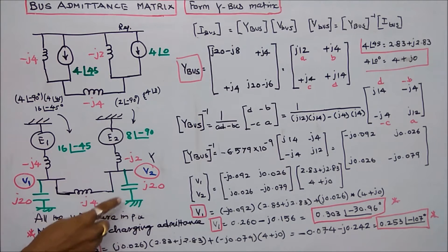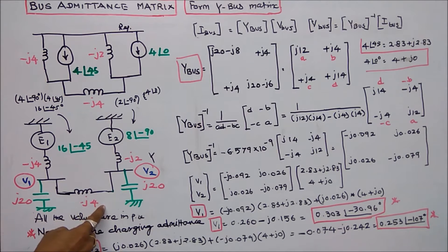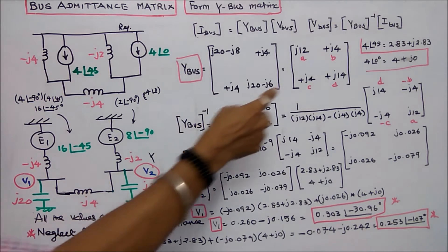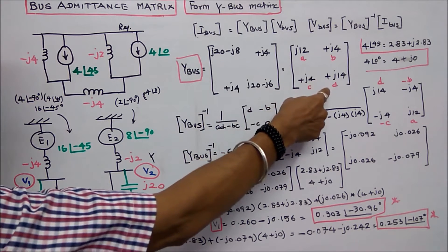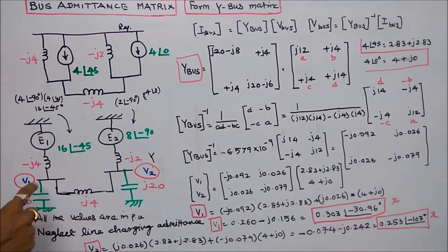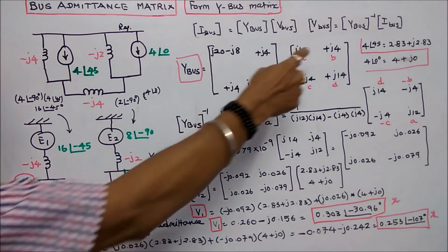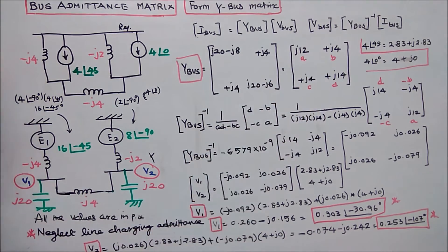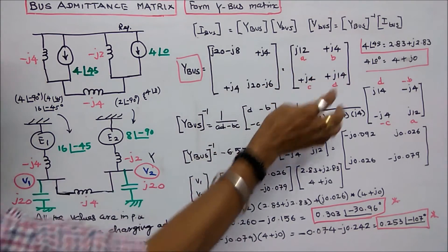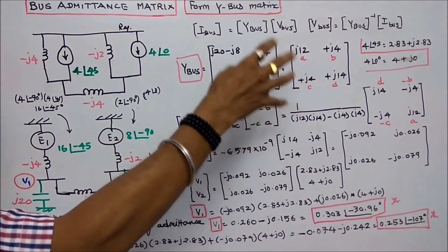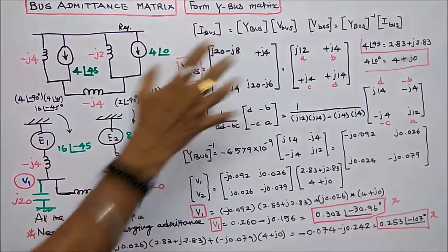At bus 2, three elements are connected: J20, minus J2, and minus J4, giving J20 minus J6, which equals J14. The element common to buses 1 and 2 is minus J4, so the off-diagonal element is plus J4. This gives the Y-bus admittance matrix of the system with elements A, B, C, D.